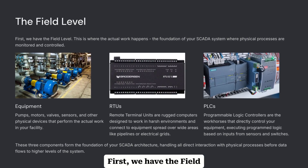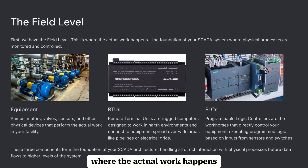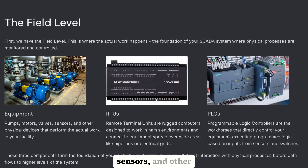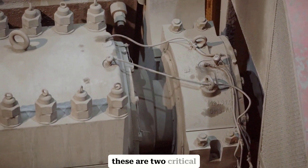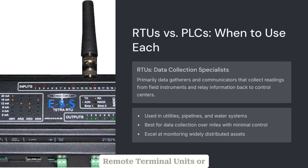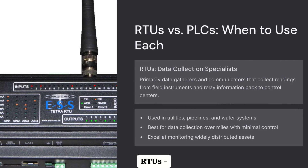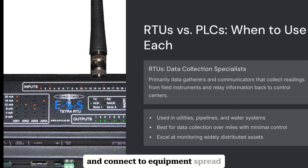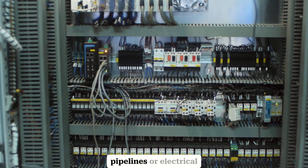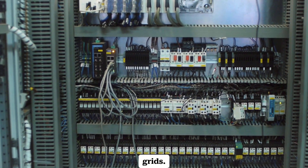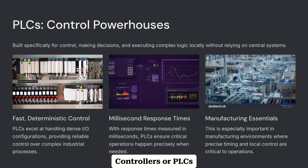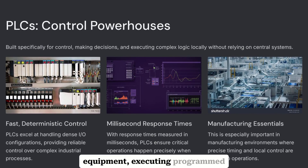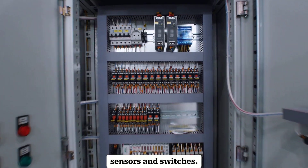First, we have the field level — this is where the actual work happens: your pumps, motors, valves, sensors, and other equipment. Connected to these are two critical components. Remote terminal units, or RTUs, are rugged computers designed to work in harsh environments and connect to equipment spread over wide areas, like pipelines or electrical grids. And programmable logic controllers, or PLCs, are the workhorses that directly control your equipment, executing programmed logic based on inputs from sensors and switches.